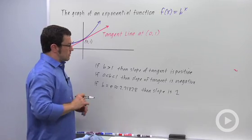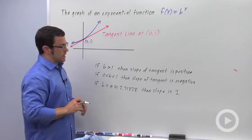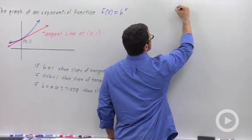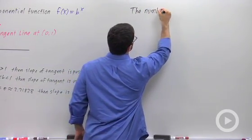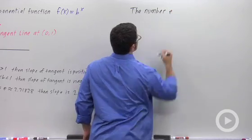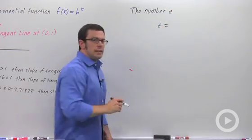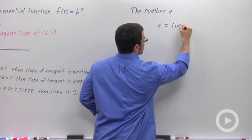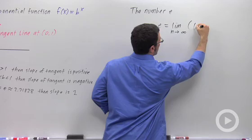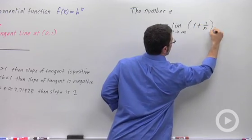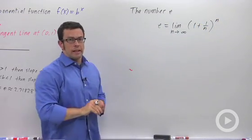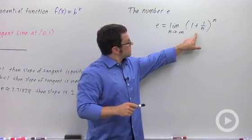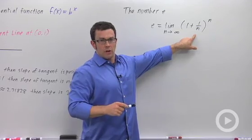So that is a little glimpse into what makes the number e special. Now let me give you a definition for the number e. e has a very complicated definition. It's a limit as n approaches infinity of (1 + 1/n) to the n. Now to help you understand this definition a little bit better, I'm going to calculate some values for this expression (1 + 1/n) to the n.